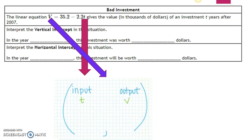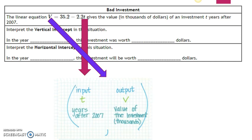We also need to make sure we know what these variables stand for — what do they represent? In the problem, we can see that t represents the years after 2007, and v represents the value of the investment in thousands of dollars. So I got all that information just from reading the original problem.